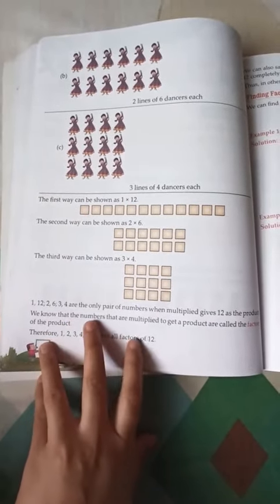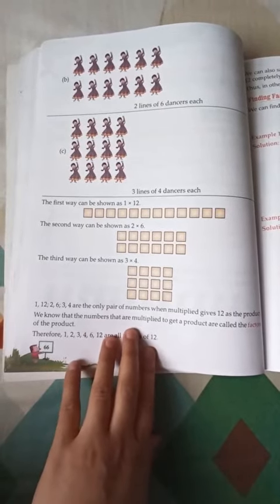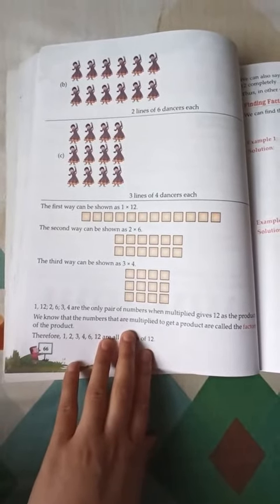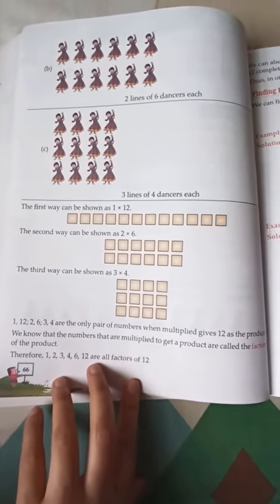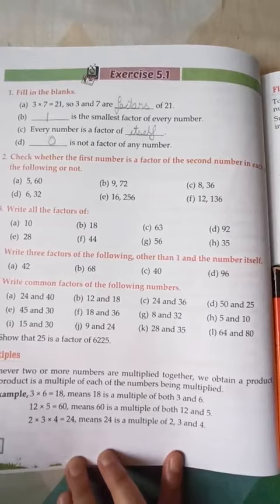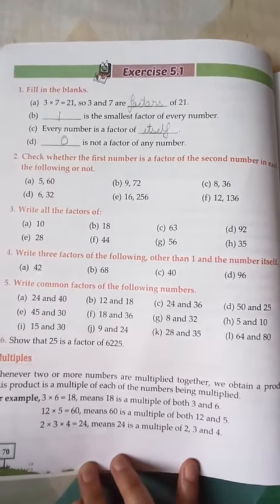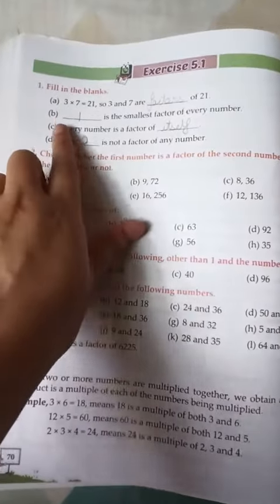Factors and Multiples. All of you take out page number 65. Here the definition of factors is given, listen. We know that numbers that are multiplied to get a product are called factors. Therefore, 1, 2, 3, 4, 6, and 12 are the factors of 12. So come to Exercise 5.1.